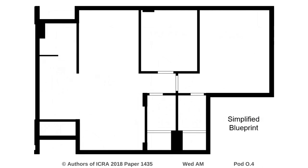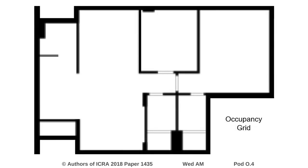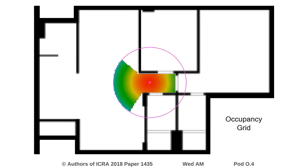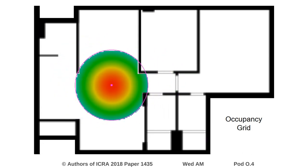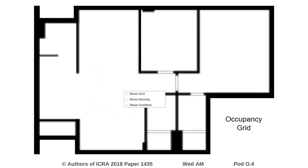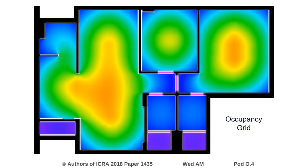We start with a simplified blueprint describing the ceiling boundaries and other features like doorways. We then convert it to an occupancy grid, which allows us to easily compute the free space density. Here are some examples. The idea is that we pre-compute this value for each cell and store it, so it can later be used by particles when simulating observation in the Monte Carlo localization strategy.